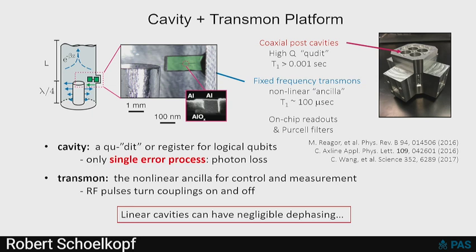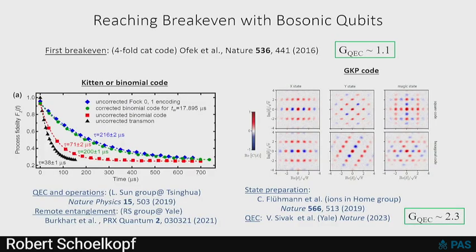We implement this in the circuit QED platform. It's a flipped version compared to what was shown before — we have microwave resonators to read out our transmons, but the transmons serve as ancillas to do measurements, state preparation, and control on our real quantum object, which is a microwave cavity with multiple energy levels where we redundantly encode information. It really just has photon loss; we can't measure intrinsic dephasing in these bare microwave cavities. The first experiment to just barely get past break-even, an error correction gain of 1.1, was about seven years ago. A more recent experiment from Michel Devereux's group using the GKP code got to an error correction gain of about 2.3, which is still the only time we've really gotten past break-even.